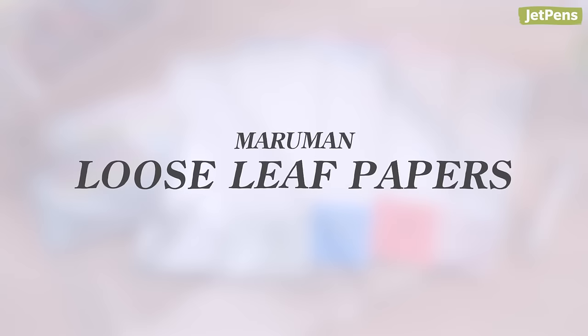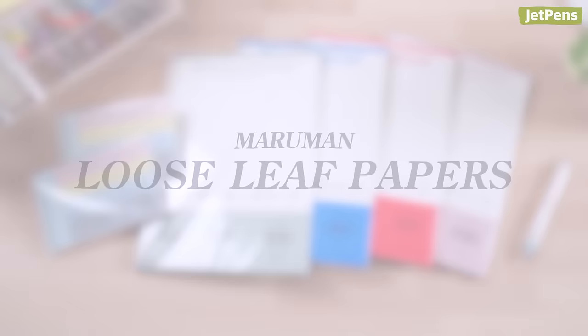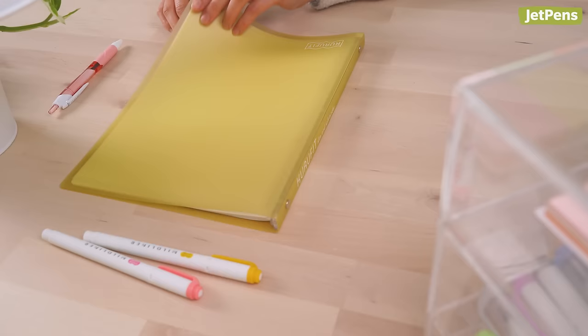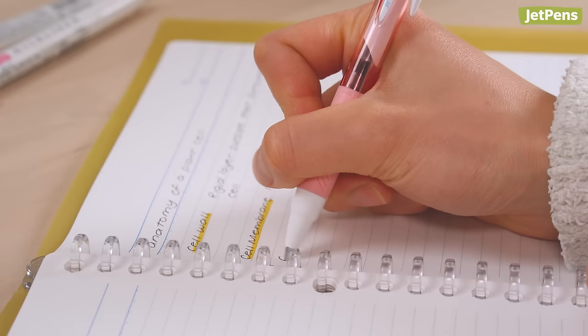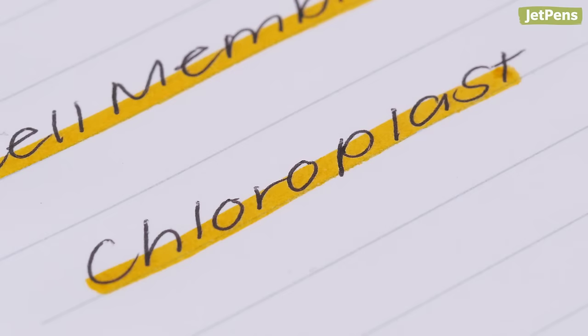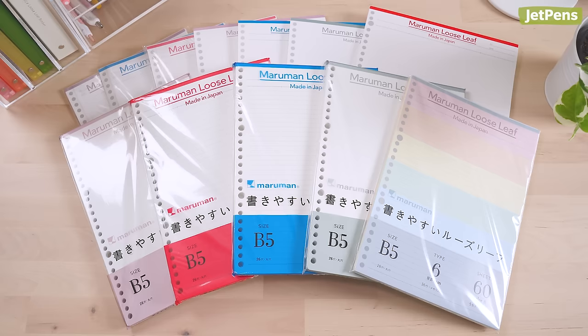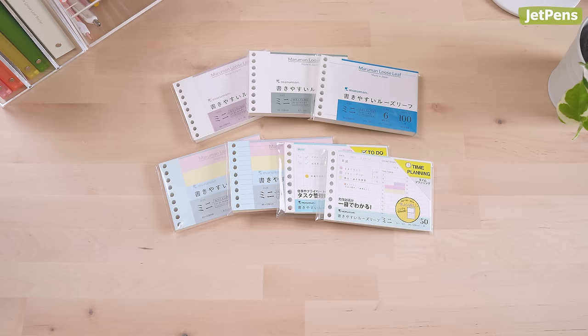Maruman Loose Leaf Papers: Easy-to-Write Loose Leaf Paper is the standard paper included in most Maruman binders. It might not look like anything special, but there's a reason why it boasts the name Easy-to-Write. Pens glide across this smooth, high-quality paper without feathering or bleeding through. It's available in both B5 and Mini B7 modified sizes.